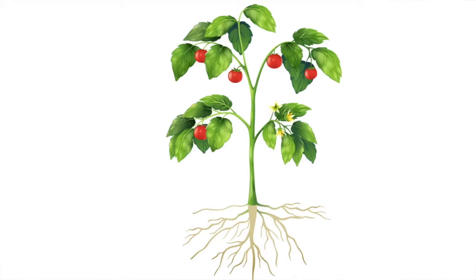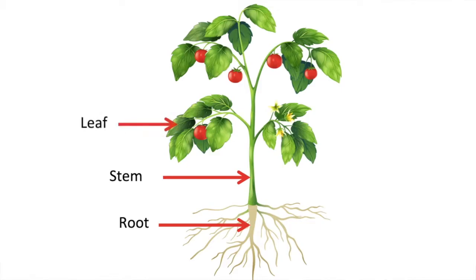Plants are living organisms. They have different parts called organs, and each organ has a specific function. The parts of a plant include roots, stem, leaves and the flower. These organs work together to enable the plant to carry out its life processes.